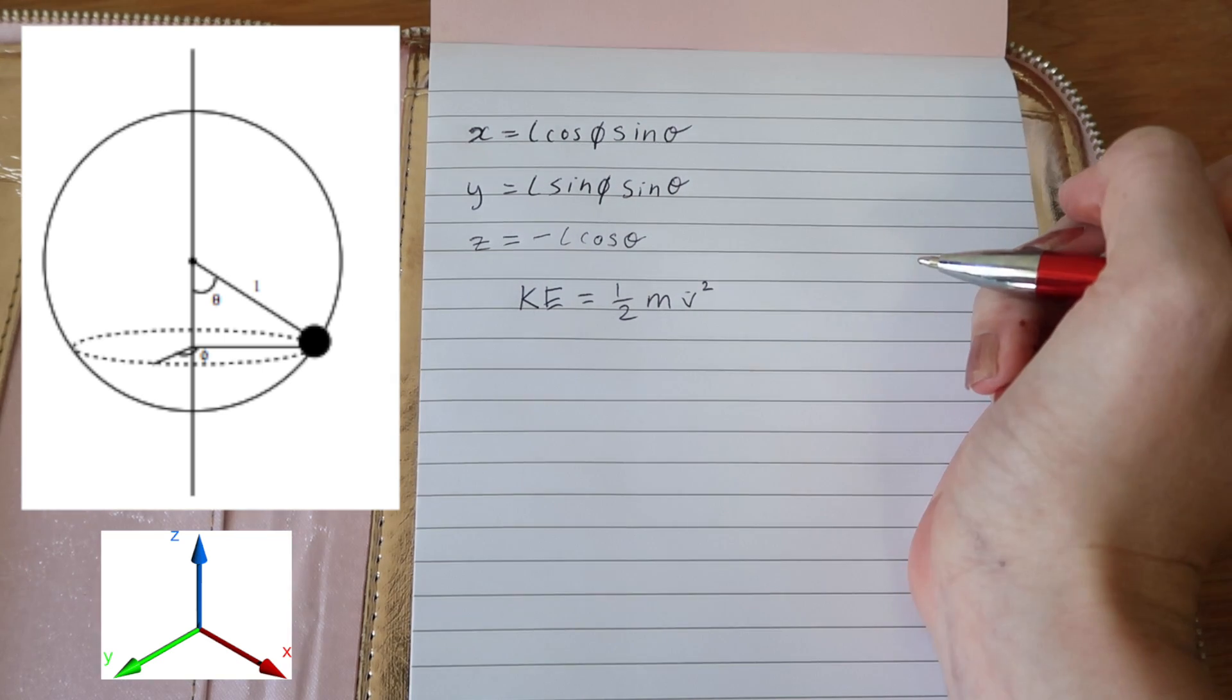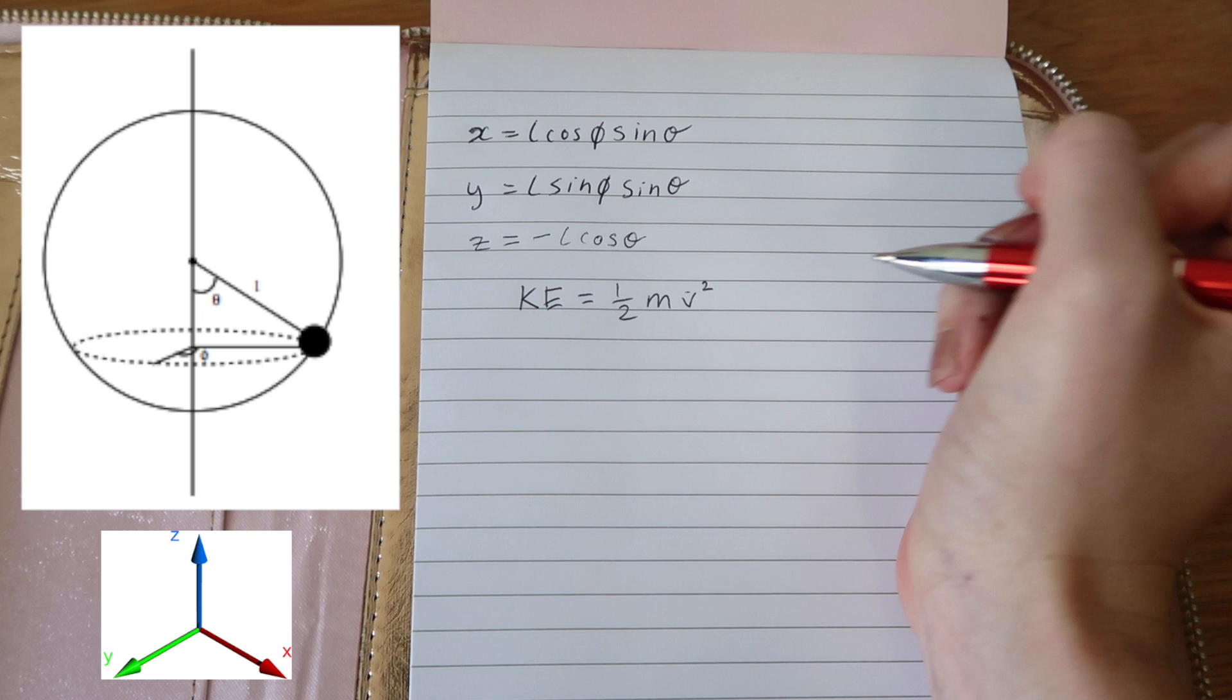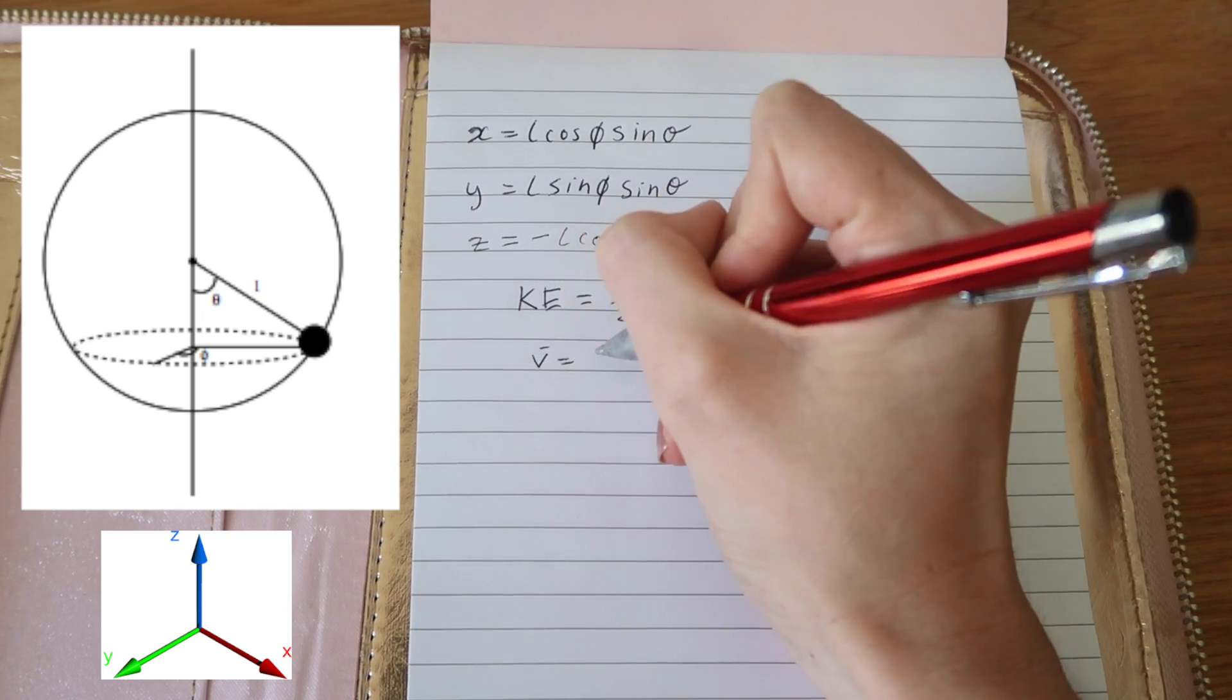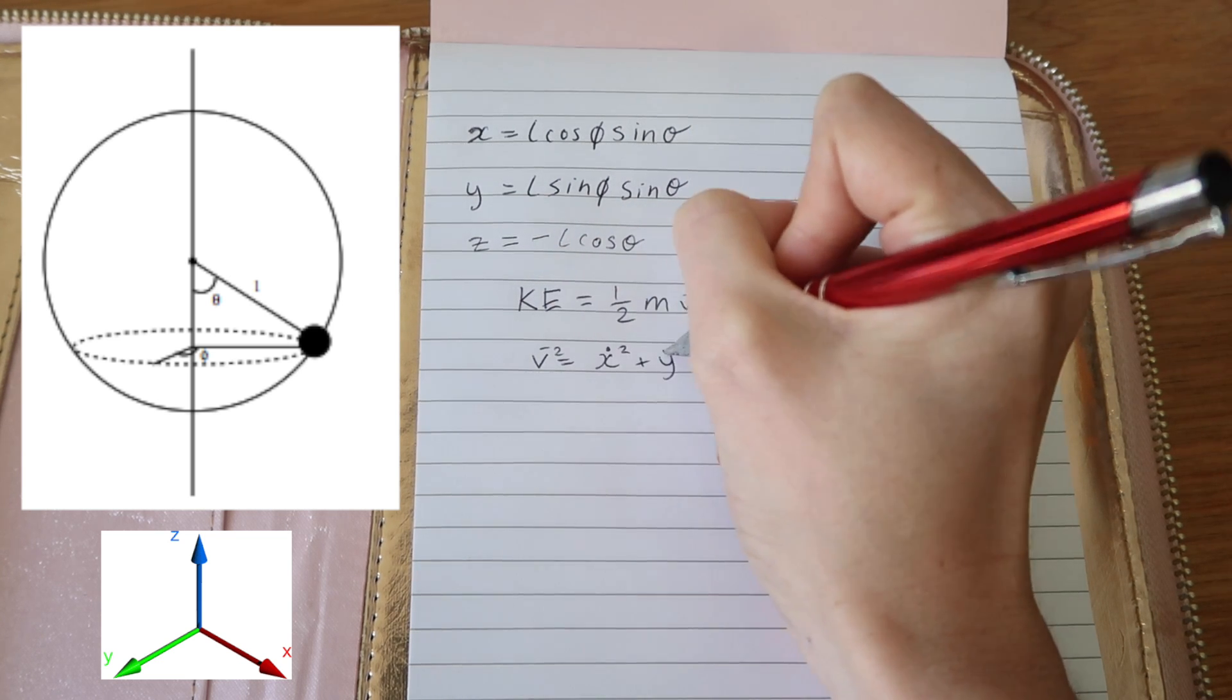To find kinetic energy we want to find a half mv squared, where in this case the velocity is a vector with three components in the x, y, and z directions.